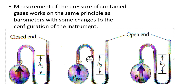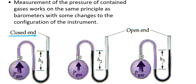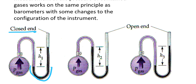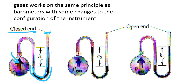Manometers can be of one of two configurations. One type is a closed-end manometer, which means this U-shaped tube is sealed off at one end — there is no exposure to the atmosphere. The only way the mercury in the tube will move and become unequal is if there is a gas within the round container that has a chance to interact with the mercury. In this case, the pressure of the gas is equal to the height difference from one side of the U-shaped tube to the other.